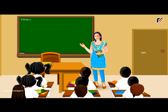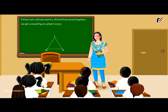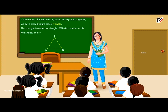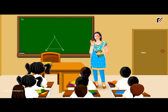If three non-collinear points L, M and N are joined together, we get a closed figure called a triangle. This triangle is named as triangle LMN with its sides as LM, MN and NL and three vertices as L, M and N. The three angles named as angle LMN, angle MNL and angle NLM are the angles of the triangle.